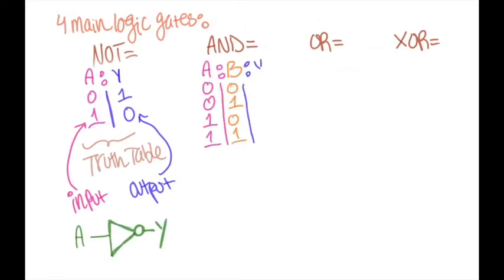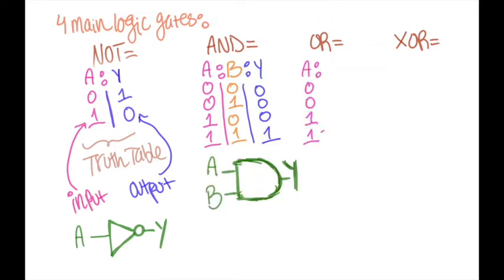An AND gate will return a one if and only if both of the inputs were one. If either or both inputs are zero, then the output will also be zero.